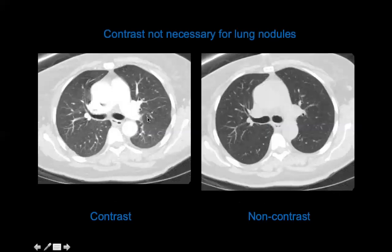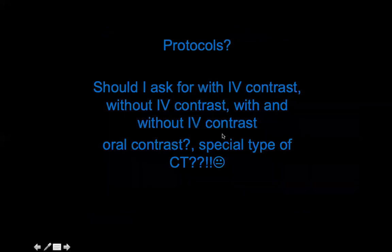For the lungs themselves, contrast isn't necessarily needed. Lung is mostly air, which appears black on imaging. A pulmonary nodule stands out against the black background of air regardless of whether contrast is given, so for pulmonary nodules you technically don't need contrast.